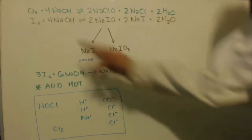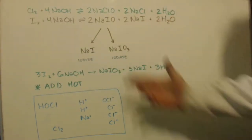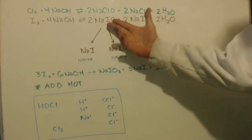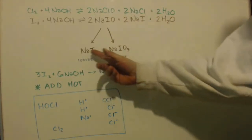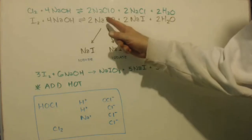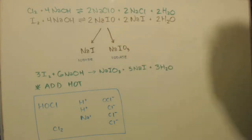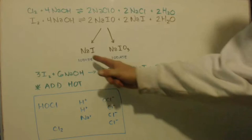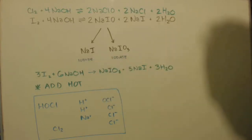So this is what we did and what we have. Since sodium hypoiodite naturally disproportionates, as time progresses it will disproportionate into iodide and iodate.